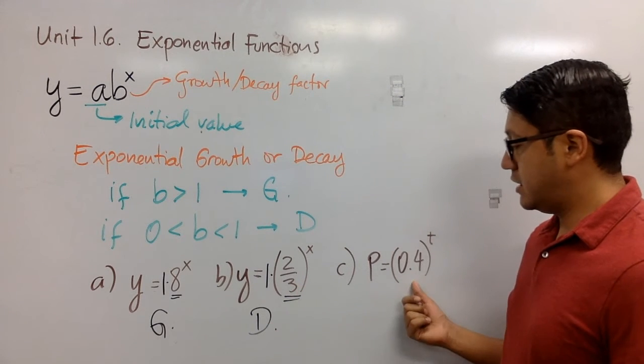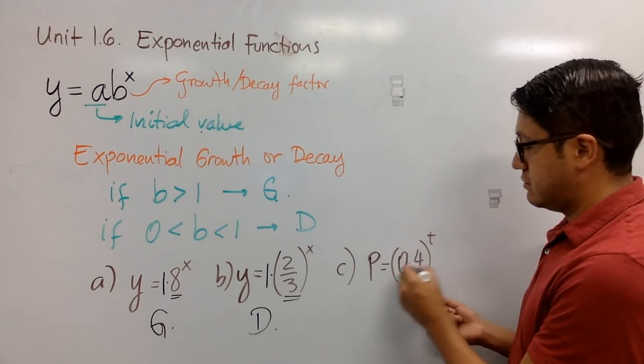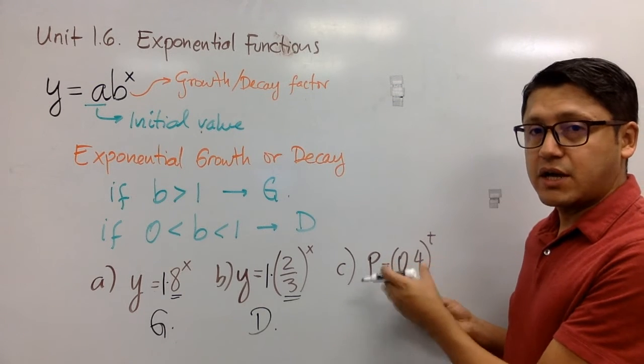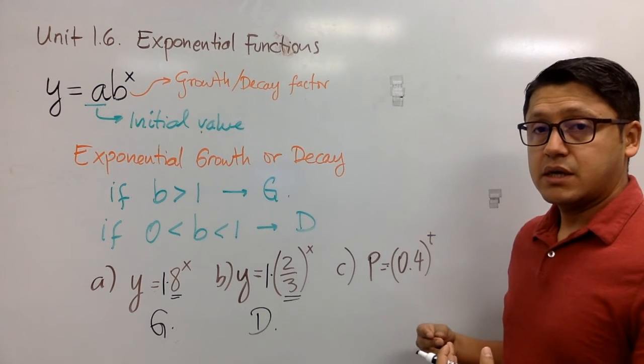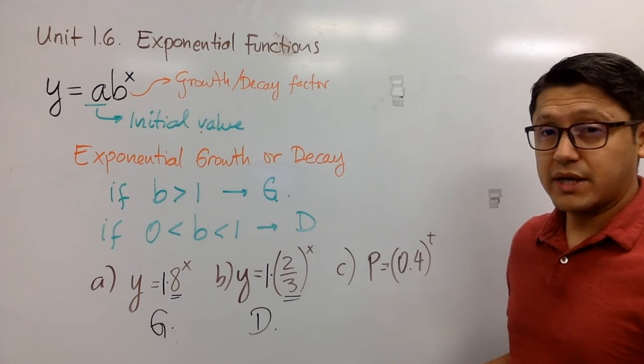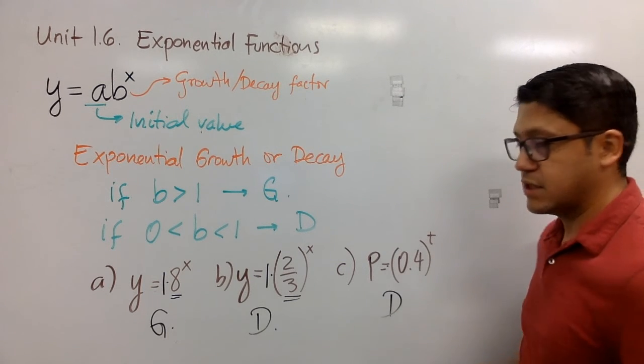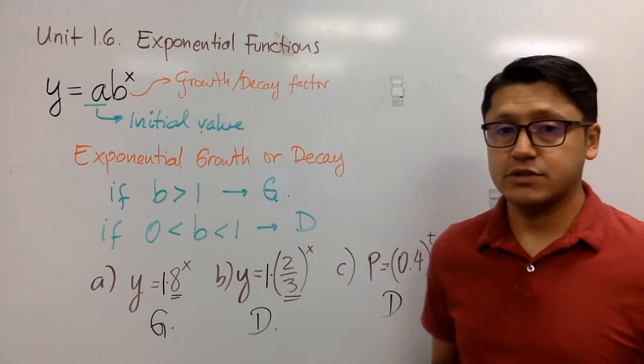Now, finally, here we have, again, you cannot see it, I don't have a space here, but the initial value is 1 again, but B is 0.4, it means that it's less than 1, and that's decay. That's all. Here we go.